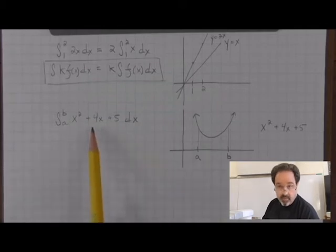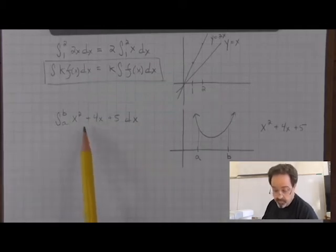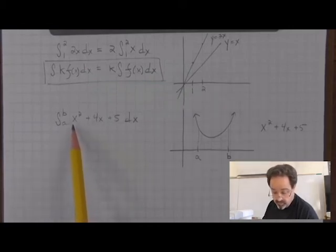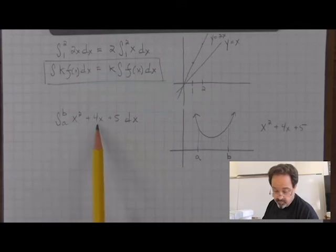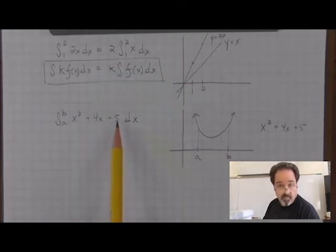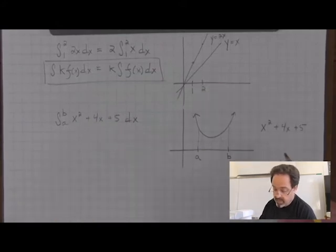If we were to proceed to find a value, we would need to be given numbers for a and b, and we would need to be able to integrate x squared plus 4x plus 5, which may be challenging. Let's observe this function.